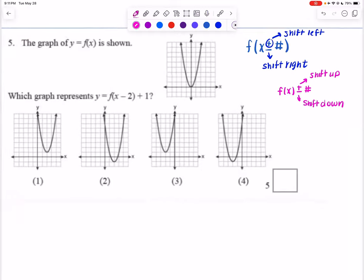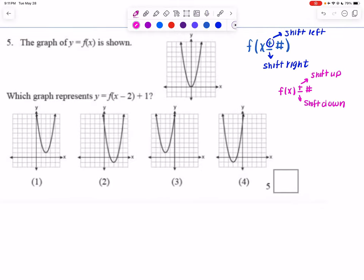So if I look at this example, it's saying f of x minus 2 plus 1. If I look on the inside of my parentheses, that minus 2 is telling me that's going to be a left 2 or a right 2. If I look at my notes, I can see that when it's minus on the inside, it's a shift right.